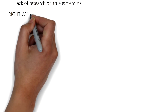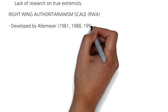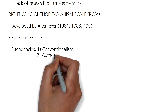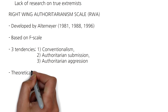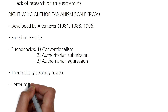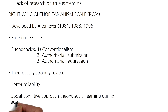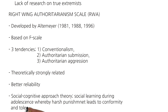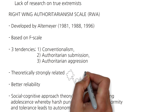Building upon this, there has been research looking at right-wing authoritarianism. Altemeyer in 1981, 1988, and 1996 developed the Right-Wing Authoritarianism scale, or the RWA. This was based on the F-scale, which was described in a previous video — I'll drop a link below. The RWA scale includes reversed-keyed items and three instead of nine tendencies. The three tendencies chosen were: conventionalism, which is adherence to social conventions endorsed by established in-group authorities; authoritarian submission, which is uncritical submission or obedience to established authorities; and authoritarian aggression, which is support for aggressiveness towards norm violators, deviants, or outgroups. These tendencies are theoretically assumed to be strongly related, which gives the scale better reliability.